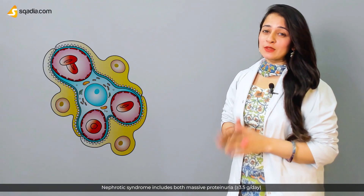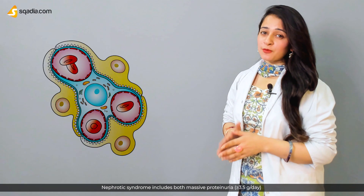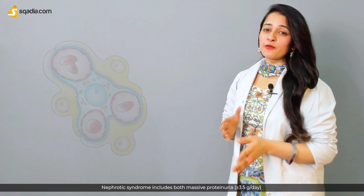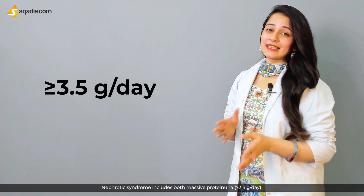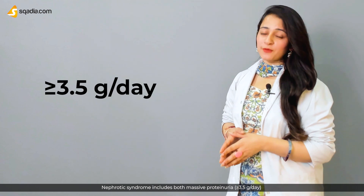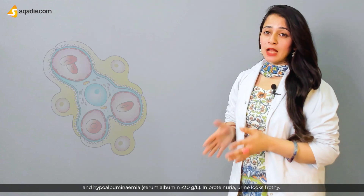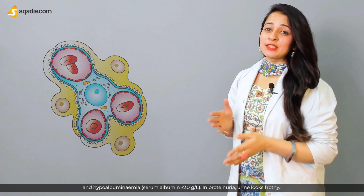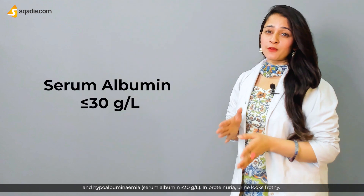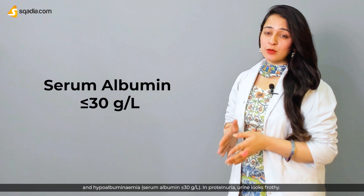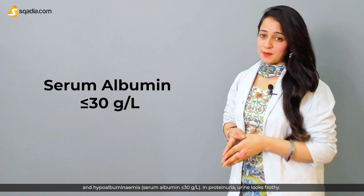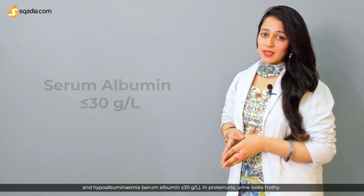Nephrotic syndrome includes both massive proteinuria of more than or equal to 3.5 grams per day and hypoalbuminemia, with serum albumin of less than or equal to 30 grams per liter.